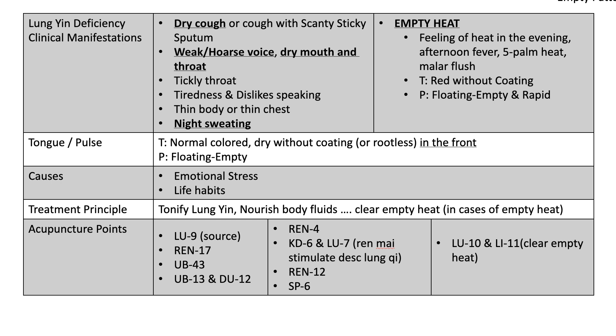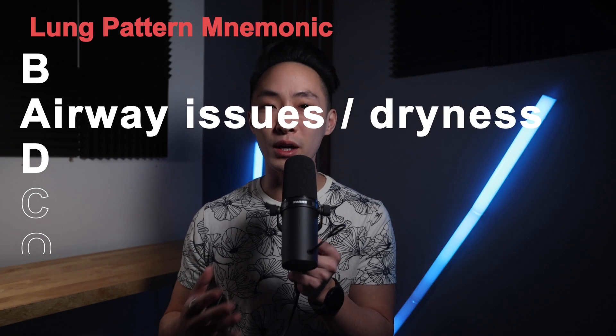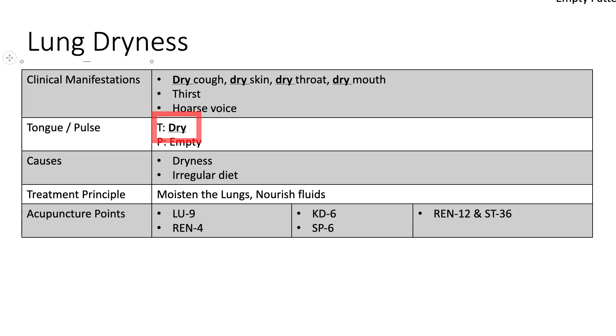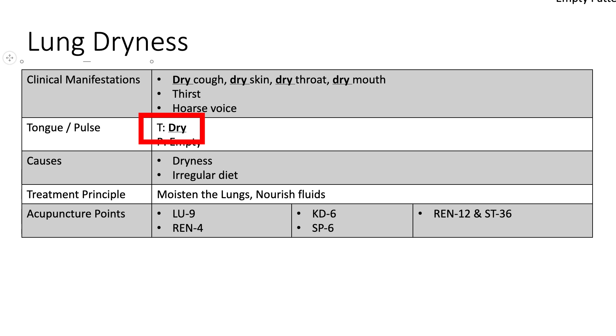When you look at the lung yin deficiency manifestations, you have dry cough — so airway dryness makes sense — weak hoarse voice, dry mouth, and dry throat. All this dryness in lung yin deficiency is because yin includes our body fluids, which is why you see all those dry manifestations. So A would probably be better to stand for airway issues or airway dryness — just think lung yin deficiency. Now the next letter is D. D is for dryness, and there's actually a pattern called lung dryness. You have dry tongue, dry cough, dry skin, dry throat, dry mouth — all with the pattern of lung dryness.